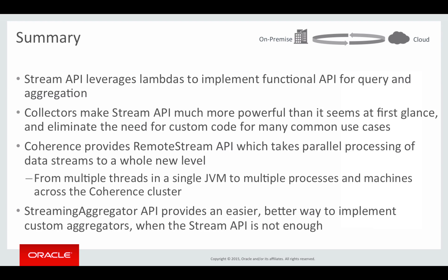That brings us to the end of this presentation. As you could see, the Stream API leverages lambdas to implement a functional API for query and aggregation. Collectors make the Stream API much more powerful than it seems at first glance and eliminate the need for custom code for many common aggregation use cases. Coherence implements a remote Stream API that takes parallel processing of data streams to a whole new level — from multiple threads in a single JVM to multiple processes across multiple machines across a whole Coherence cluster. Finally, the StreamingAggregator API provides an easier, better way to implement custom aggregators when the Stream API is not enough. I hope you enjoyed the presentation — feel free to post any questions or feedback in the comment section and reach out via social media. Thank you.